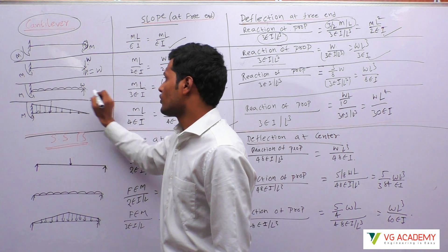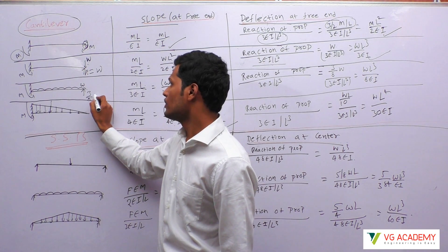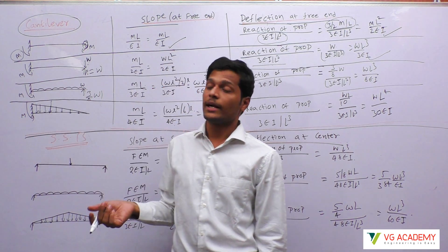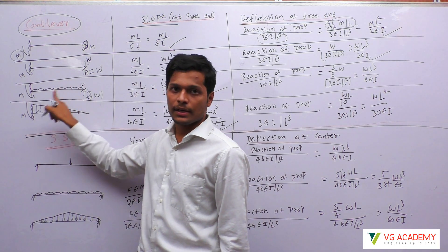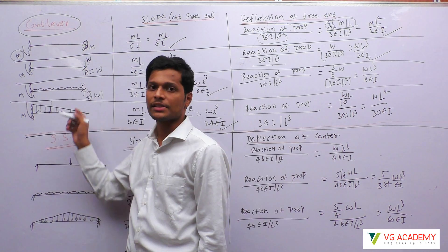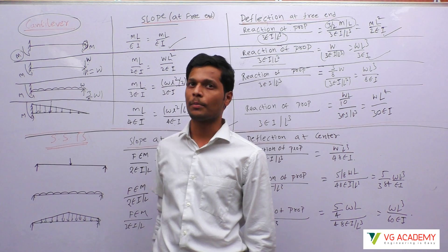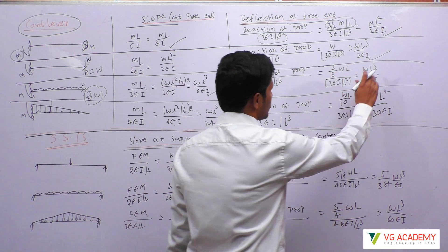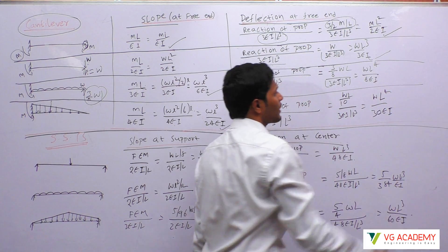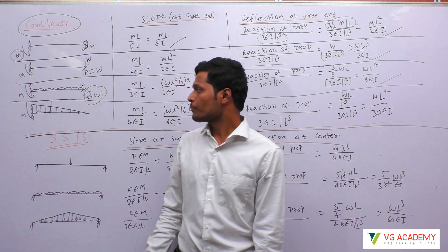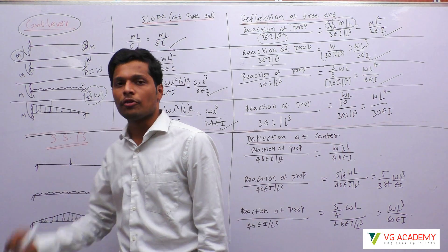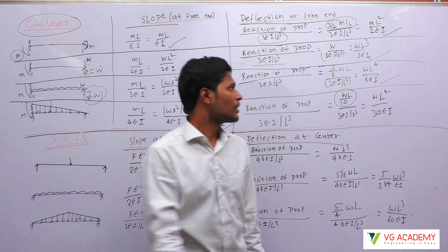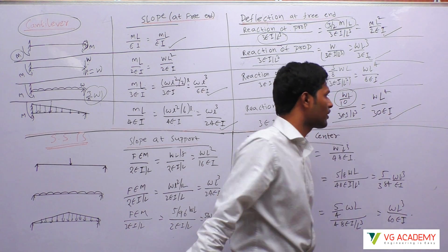For a UDL on a propped cantilever, the standard reaction at the prop is 3 by 8 times WL, and 5 by 8 times WL goes to the fixed end. Substituting 3 by 8 WL gives WL to the power 4 divided by 8EI. For a UVL (triangular load), the reaction of the prop is WL by 10 for a propped cantilever. Dividing by 3EI by L cubed gives WL to the power 4 divided by 30EI.